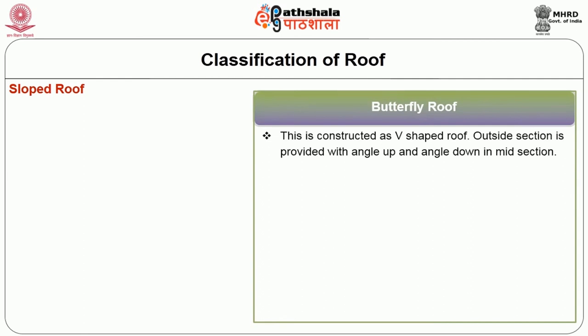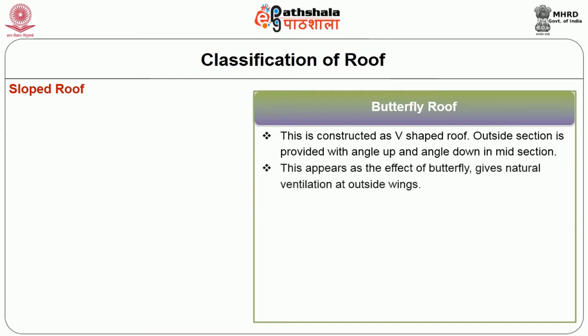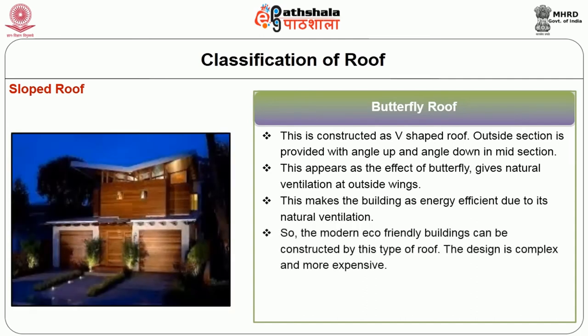Butterfly roof is constructed as a V-shaped roof. The outside sections are provided with angles up, and the mid-section angles down. This appears as the effect of a butterfly and gives natural ventilation through the outside wings. This makes the building energy efficient due to its natural ventilation. Modern eco-friendly buildings can be constructed with this type of roof, though the design is complex and more expensive.